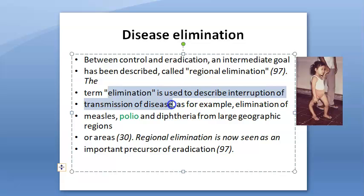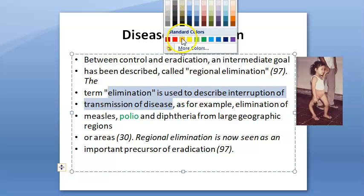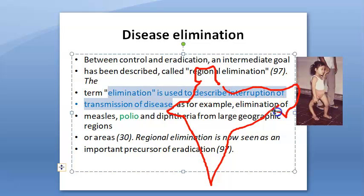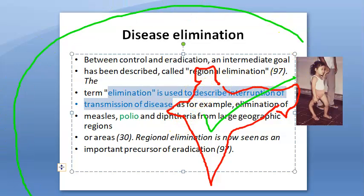Elimination means the interruption of transmission of disease. This is mostly a regional thing — for example, in India, you want to eliminate polio. So in this region polio is eliminated. But it is not yet eradicated — we have not got the eradicated status. Once it is eliminated from all countries, you can say it is eradicated from the world.